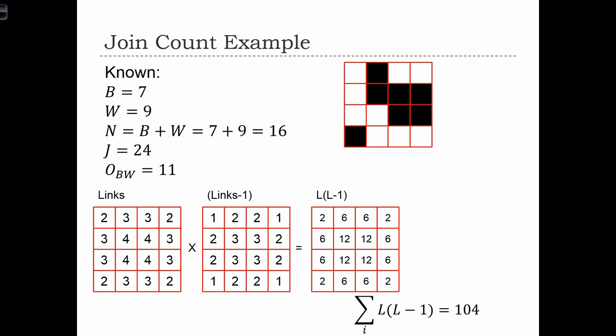So what's known from this map? We can calculate B, W, N, and J very easily. N is 16, that's just because we have 16 cells on this map. Of those 16, 1, 2, 3, 4, 5, 6, 7 of them are black, so B equals 7, and 9 are white. This is a 4x4 grid, and all 4x4 grids, when using rook connectivity, are going to have 24 joins.